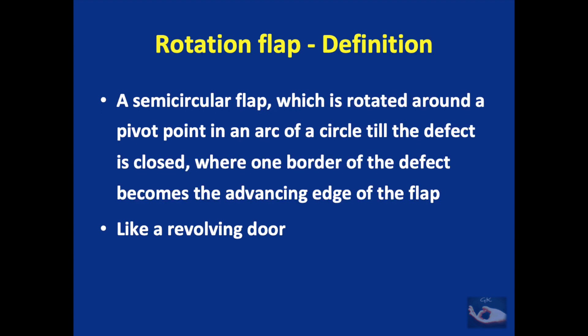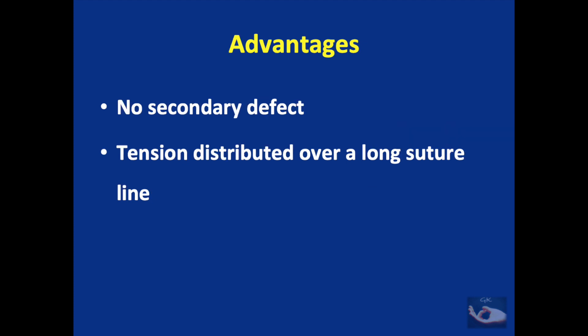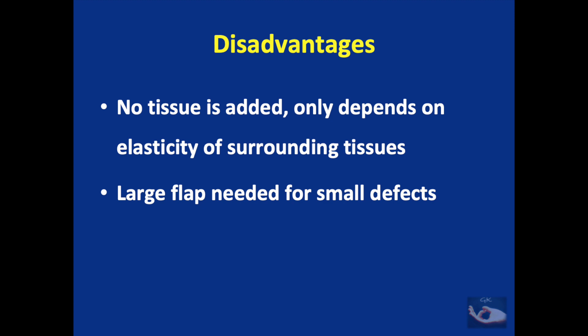The rotation flap is a semi-circular flap which is rotated around a pivot point in an arc of a circle till the defect is closed, where one border of the defect becomes the advancing edge of the flap — it behaves like a revolving door. The advantages are that there is no resultant secondary defect and the tension is distributed over a long suture line. On the downside, no tissue is added; the rotation flap depends only on the elasticity of the surrounding tissues, and a large flap is needed for small defects.